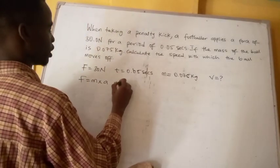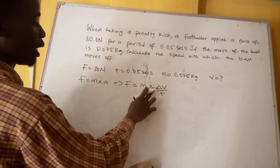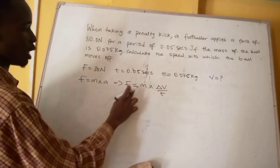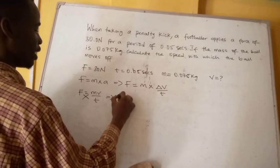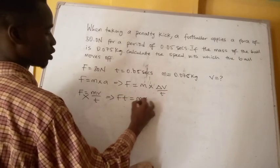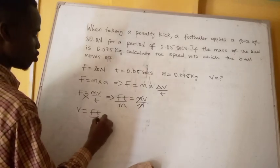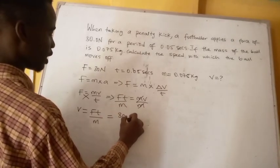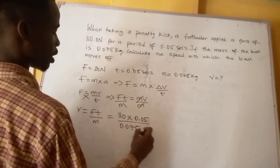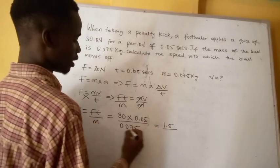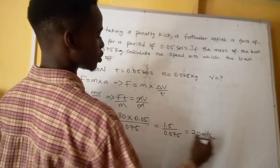We remember that force equals mass times acceleration, and acceleration is change in velocity over time. So force equals mass times velocity over time. Making velocity the subject, we multiply both sides by time: Ft = mv, then divide both sides by m to get velocity = Ft / m. Substituting: velocity = (30 × 0.05) / 0.075 = 1.5 / 0.075 = 20 meters per second.